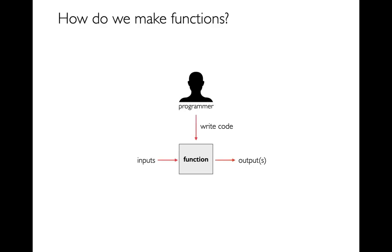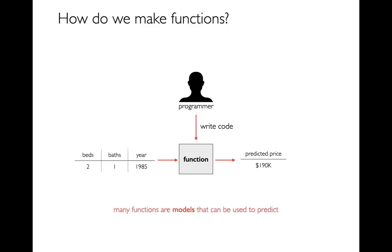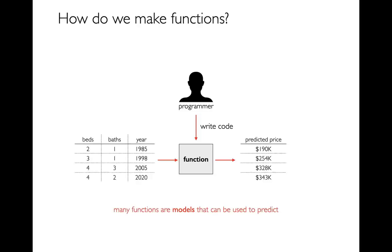All of you have been running functions for a long time. Functions take inputs, maybe in the form of parameters, and then they have some outputs — maybe printing something or returning a value. For example, a function could be doing something like making a prediction. Maybe my input is some details about a house that's for sale, and then I might be predicting what it might sell for. That's an example of a model — and I could feed in a bunch of values and make a bunch of predictions.